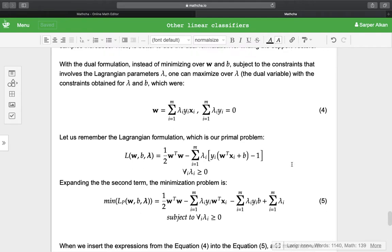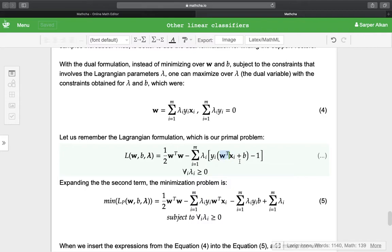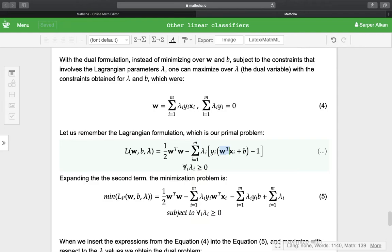Let us remember the Lagrangian formulation, which is our primal problem: L(W, B, λ) = 1/2 W^T W - Σ(i=1 to m) λᵢyᵢ(W^T xᵢ + B - 1), for λᵢ ≥ 0. When we expand the second term, we have these terms which you can work through yourself.